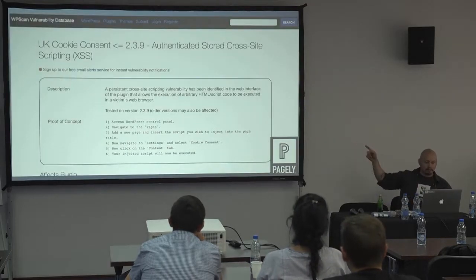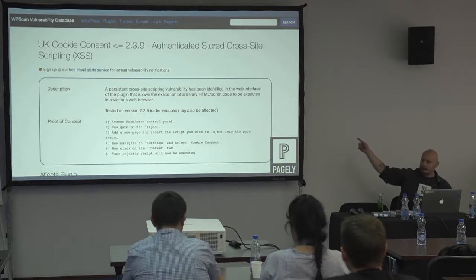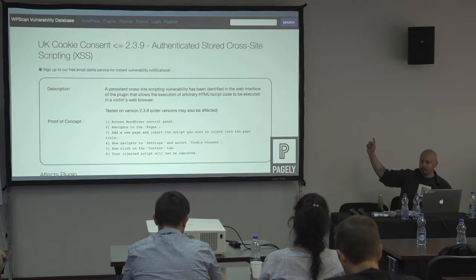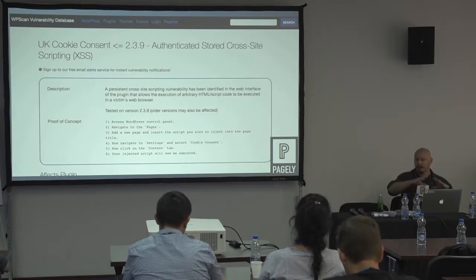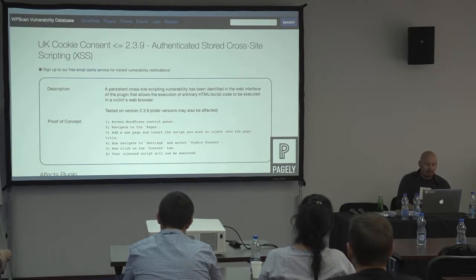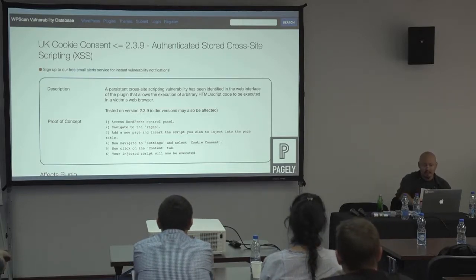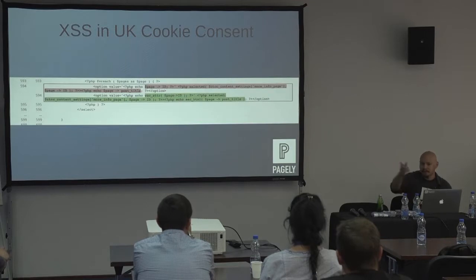This example is from the WPScan Vulnerability Database — great people. You can email them if you have vulnerabilities and get your name on their website. From that site you can look into the diffs to see what changed and how the vulnerability worked.